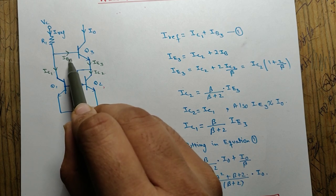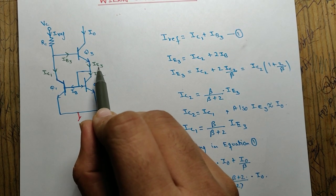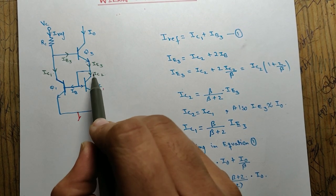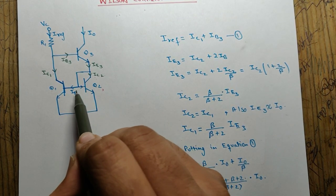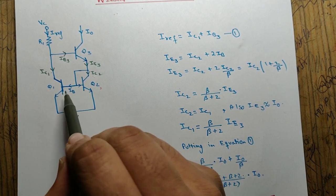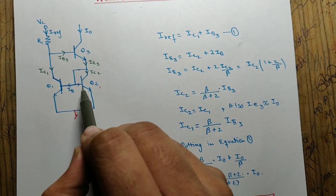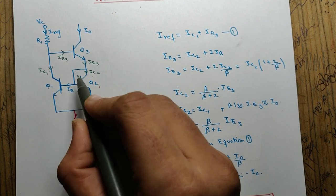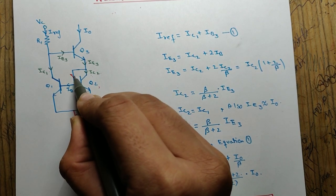This is ie3, emitter current of transistor 3, ic2 collector current of transistor 2, and this is ib. I have considered these two transistors to be identical, so the base current in both these transistors are same. So here will be our 2ib.